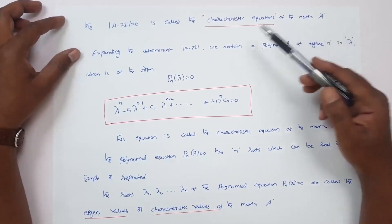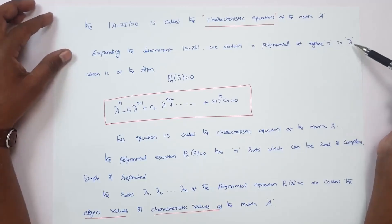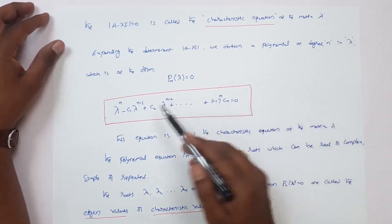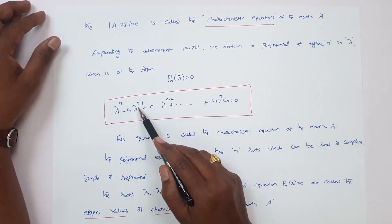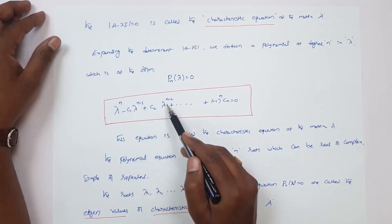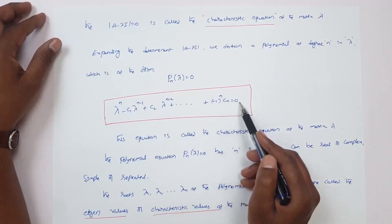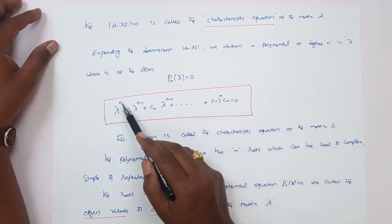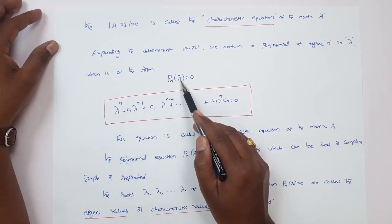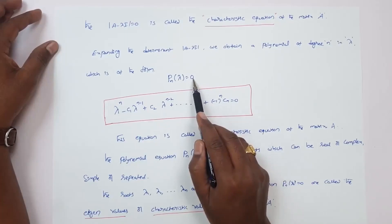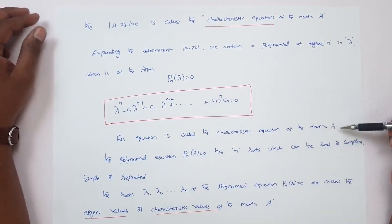Expanding the determinant of A minus lambda I, we obtain a polynomial of degree n in lambda, which is of the form: lambda to the power n minus c1 times lambda to the power n minus 1 plus c2 times lambda to the power n minus 2, and so on, plus (minus 1) to the power n times c_n equals zero. We get an nth degree polynomial in the variable lambda, say p_n(lambda) equals zero. This equation is called the characteristic equation of the matrix A.